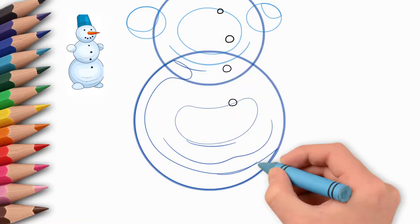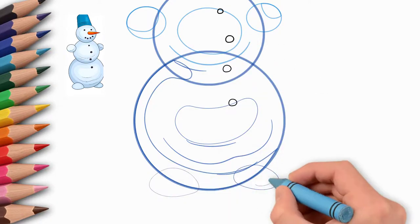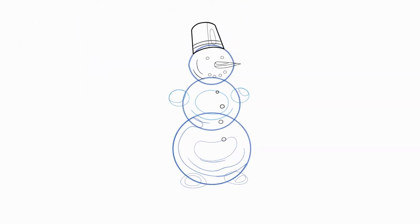And now draw a snowman in a light blue color. Draw carrots in red and yellow. See again how you can draw a snowman.